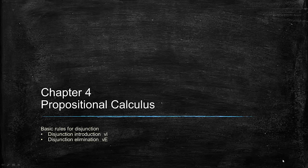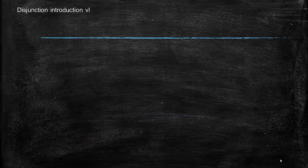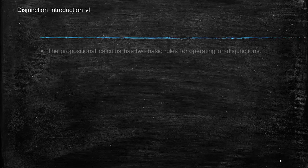Alright, so now we'll add two more rules — two more basic or non-derived rules — and these are the rules for working with disjunctions: disjunction introduction and disjunction elimination.